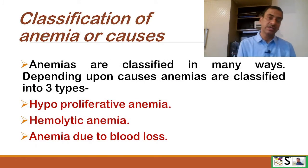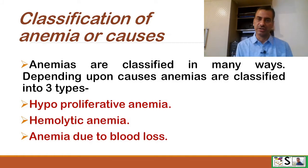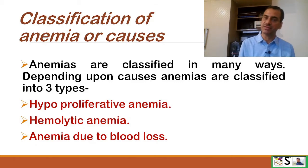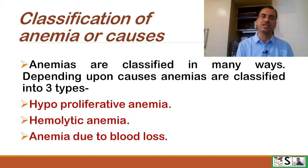How will we classify anemias? Anemias are classified in many ways, and one of them is based on causes. Based on causes, anemias are classified into three types: hypoproliferative anemia, hemolytic anemia, and anemias due to blood loss.